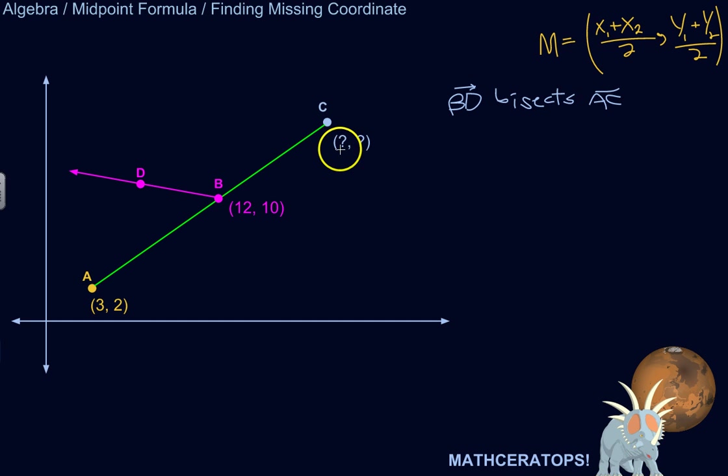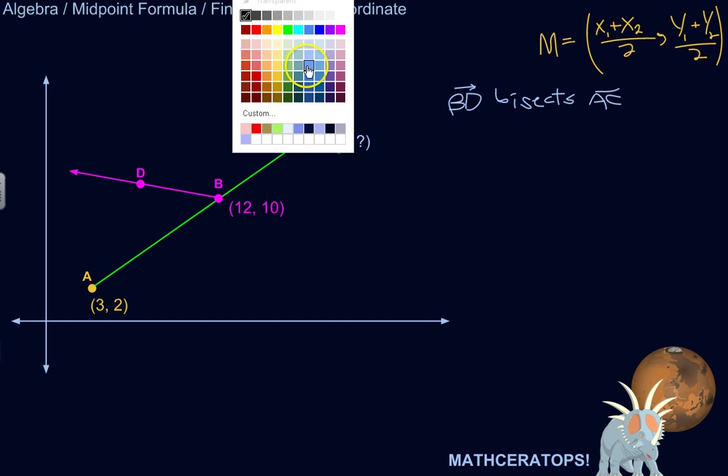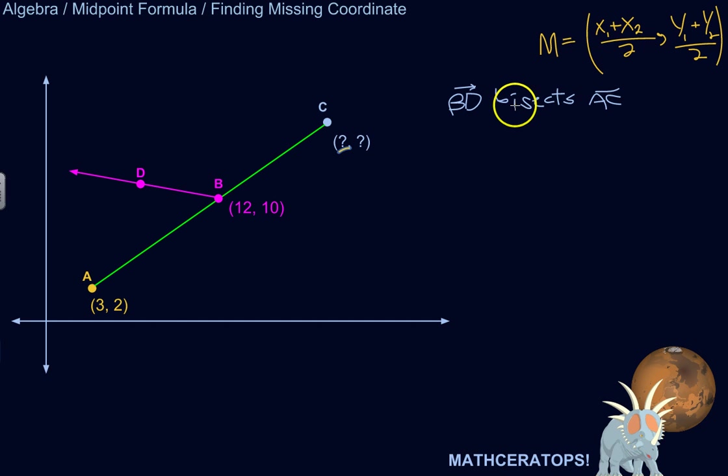Let's work on the x-coordinate first. Let's call this point 1 and the missing point 2. The formula here is x1 plus x2 over 2 equals the x-coordinate of the midpoint.